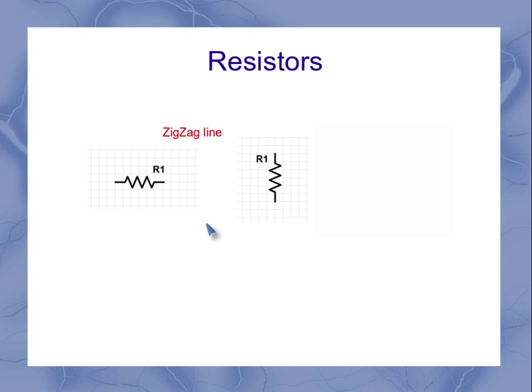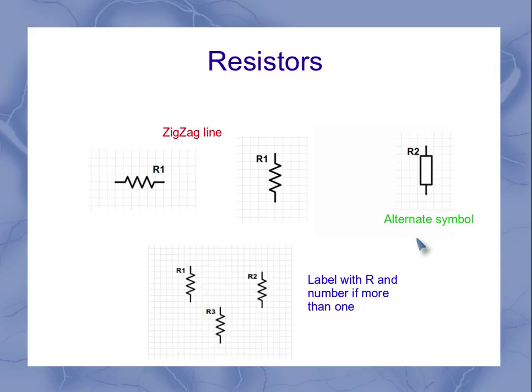Now you may see some circuit diagrams that have an alternate symbol. This one's more common in Europe, I'm told. And again, if I've got more than one resistor in a particular circuit, they'll generally be labeled with an R and a number.